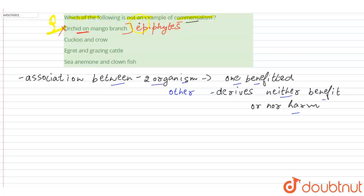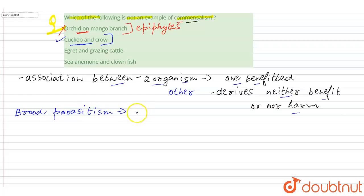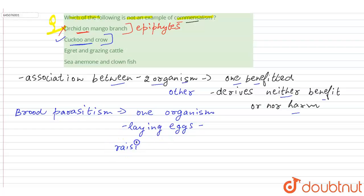The next option is cuckoo and crow. This is the correct answer because cuckoo and crow are not an example of commensalism — rather, they are an example of brood parasitism, where one organism is dependent on the other for laying eggs or for raising their young ones.